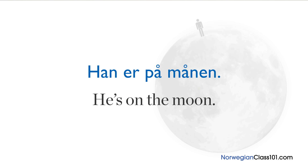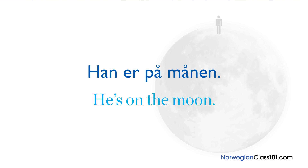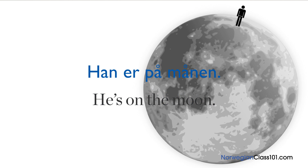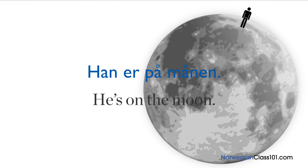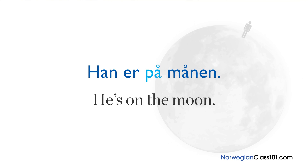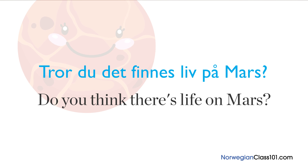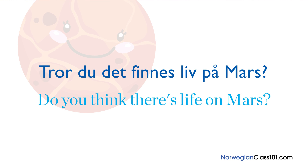Let's use the sentence han er på månen, meaning 'he's on the moon.' Here we're talking about an astronomical object, so we use på. Another example would be tror du det finnes liv på Mars? This means 'do you think there's life on Mars?'